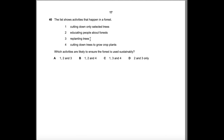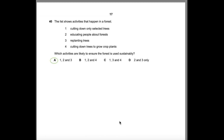Question 40: The list shows activities in a forest: cutting down only selected trees, educating people about forests, replanting trees, and cutting down trees to grow crop plants. Which activities ensure the forest is used sustainably? Cutting only selected trees preserves biodiversity, educating people promotes conservation, and replanting trees maintains forest cover. Cutting down trees for crops is not sustainable. Activities 1, 2, and 3 are sustainable. Answer: A.